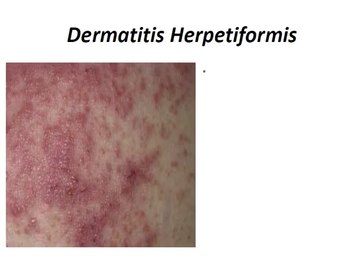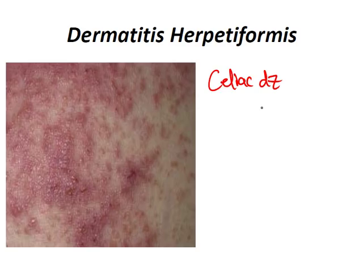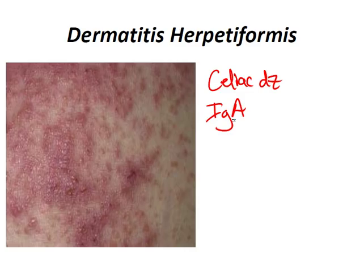Dermatitis herpetiformis is an autoimmune blistering disorder associated with gluten-sensitive enteropathy or celiac disease. It's caused by deposition of IgA — not IgG — in the papillary dermis, triggering an immune cascade resulting in neutrophil recruitment. It usually presents with flesh-colored to erythematous papules or plaques with herpetiform (small and clustered) vesicles symmetrically distributed over extensor surfaces, including the elbows, knees, buttocks, and shoulders.